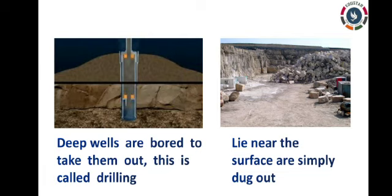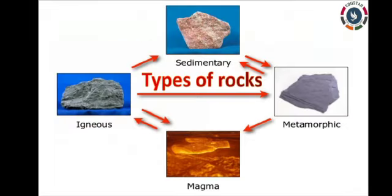Now moving on to the distribution of minerals. There are three types of rocks: igneous, metamorphic, and sedimentary. Igneous rocks are formed by molten magma, metamorphic rocks are formed due to high pressure on igneous and sedimentary rocks, and sedimentary rocks are usually found in seabeds because of decayed fossils. Coal and petroleum are found in sedimentary rocks.